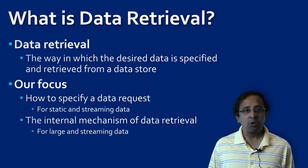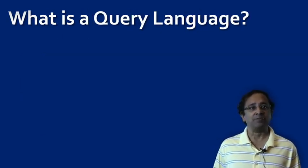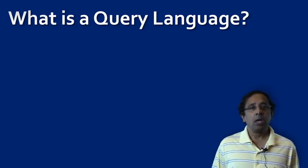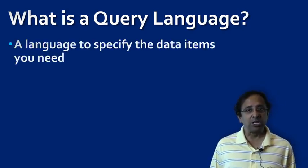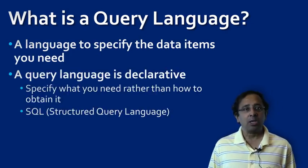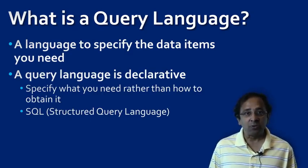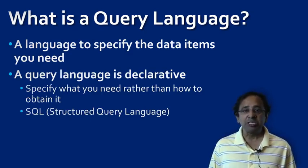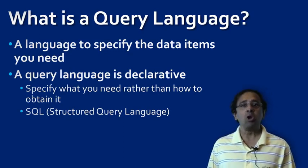While query specification can apply to small data stores or large data stores, we'll keep an eye on the nature of query evaluation when the data is big. Further, we'll consider how the query specification changes when we deal with fast or streaming data. A query language is a language in which a retrieval request is specified. A query language is often called declarative, which means it lets you specify what you want to retrieve without having to tell the system how to retrieve.